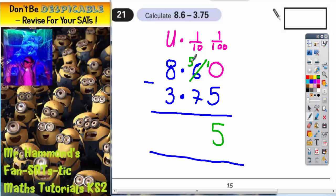Now onto the tenths column. 5 take away 7 we can't do. So we go to the 8 and borrow one. Borrow one from 8 and it becomes 7. And the one we borrowed turns this 5 into 15. 15 take away 7 is 8.